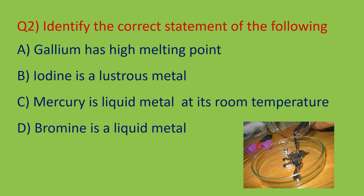Option D — bromine is a liquid metal — is wrong; bromine is a liquid but it is a non-metal. Option C states that mercury is a liquid metal at room temperature. You can see in the image that mercury can be poured from one vessel to another, confirming it is a liquid metal at room temperature. So option C is the right answer.